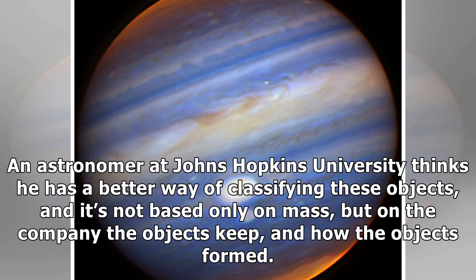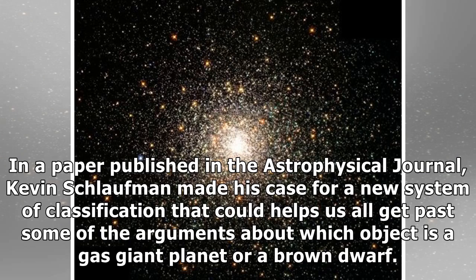An astronomer at Johns Hopkins University thinks he has a better way of classifying these objects, and it's not based only on mass, but on the company the objects keep and how the objects formed. In a paper published in the Astrophysical Journal, Kevin Schlauffman made his case for a new system of classification that could help us all get past some of the arguments about which object is a gas giant planet or a brown dwarf.